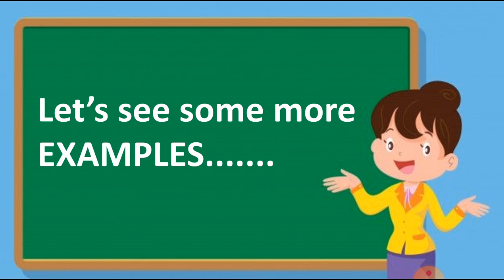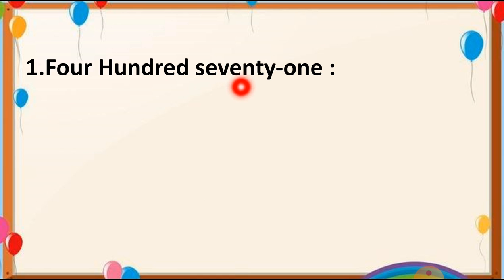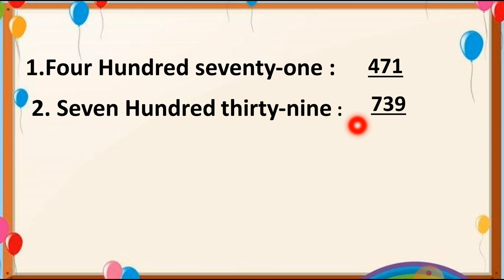Let us see some more examples. First: 471. Which number at the 100's place? Number 4 at the 100's place and then 71, so we write 471. The next example: 739. At the 100's place we write 7 and after 7 we write 39, so this number is 739.